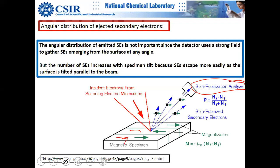Magnetic domain imaging is also possible in TEM, where incoming electrons passing through different domains with different spin alignments will experience different Lorentz forces and can be imaged accordingly.